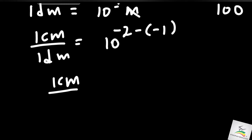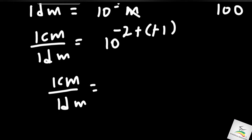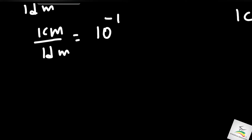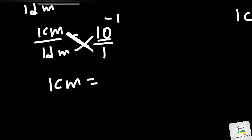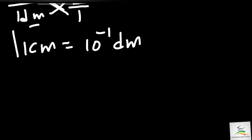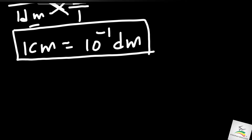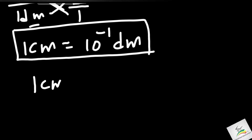One centimeter over one decimeter equals ten to the power of minus two plus one, which is ten to the power of minus one. Therefore, one centimeter equals ten to the power of minus one decimeters, which is 0.1 decimeters.